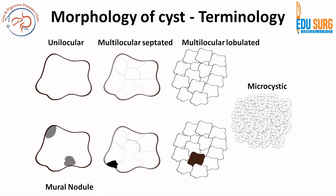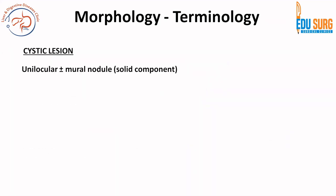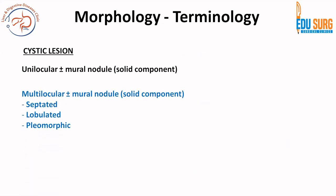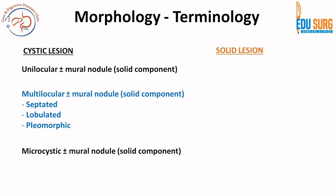To summarize the basic morphological appearances of pancreatic cystic neoplasms: a cystic lesion can be unilocular with or without a mural nodule, or multilocular with or without a solid component or mural nodule. Multilocular can be septated, lobulated (also sometimes called macrocystic), or multilocular pleomorphic. You can also have microcystic lesions — mural nodule is very rare in microcystic but can be present.